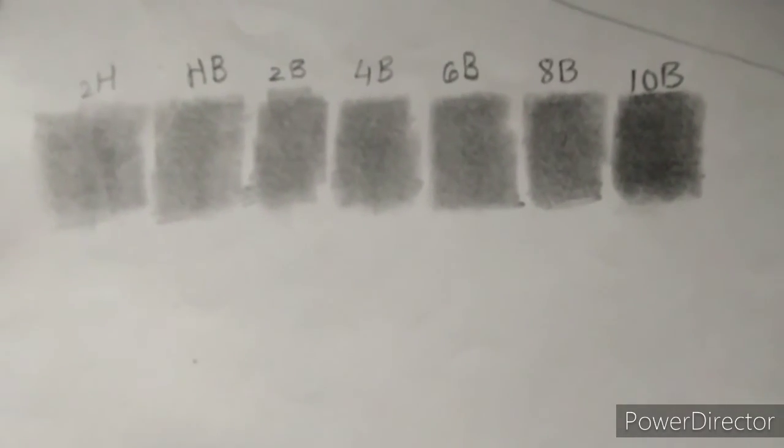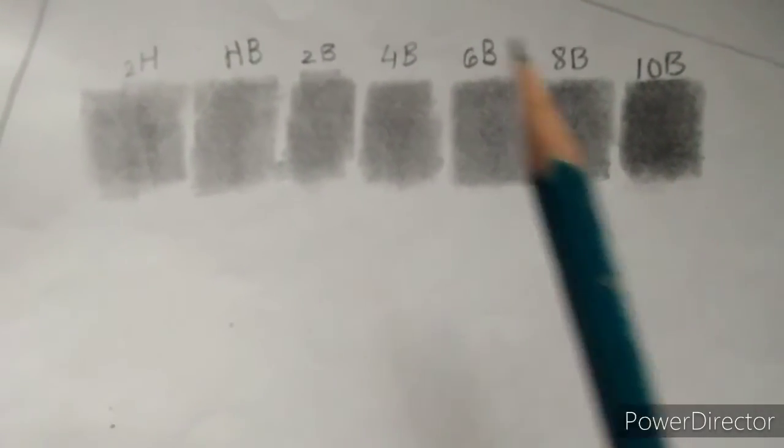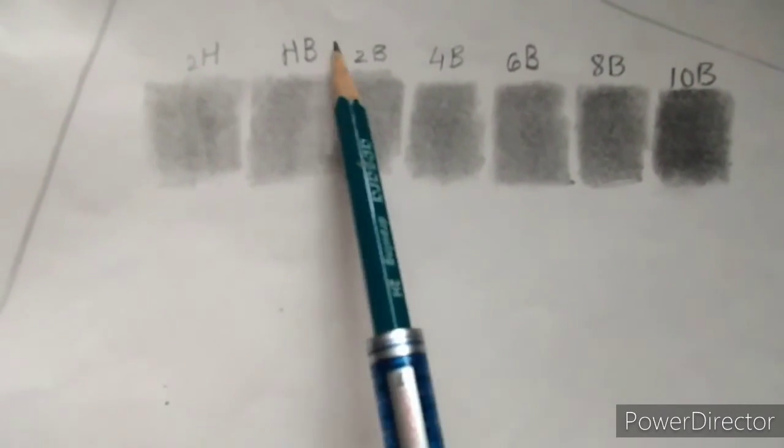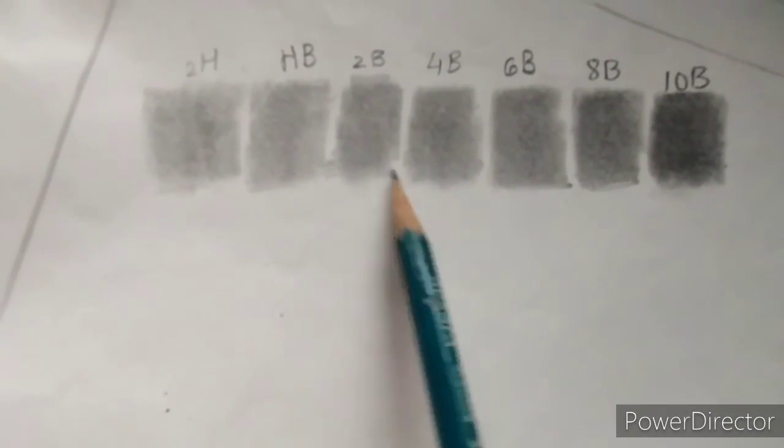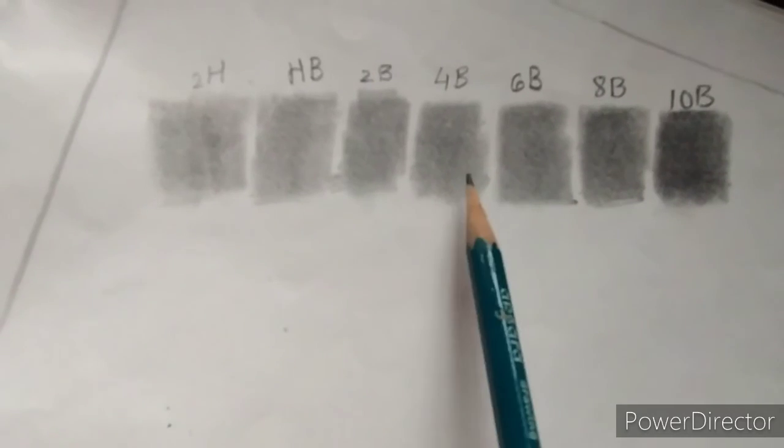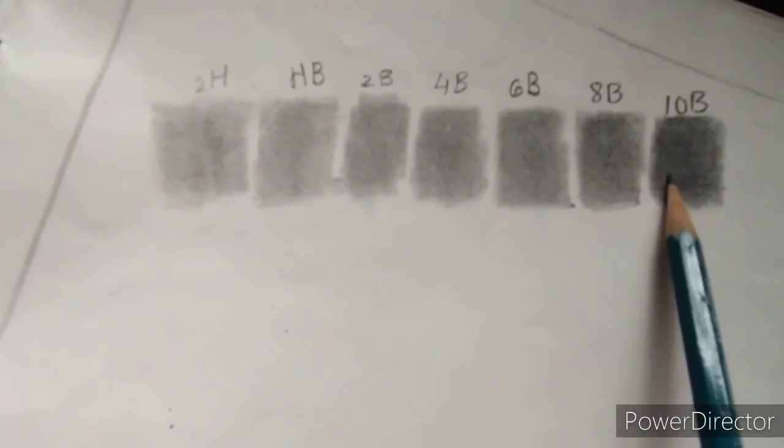You can see here the difference after blending. This is 2B. So you can see 2H and 2B, the difference between two families.